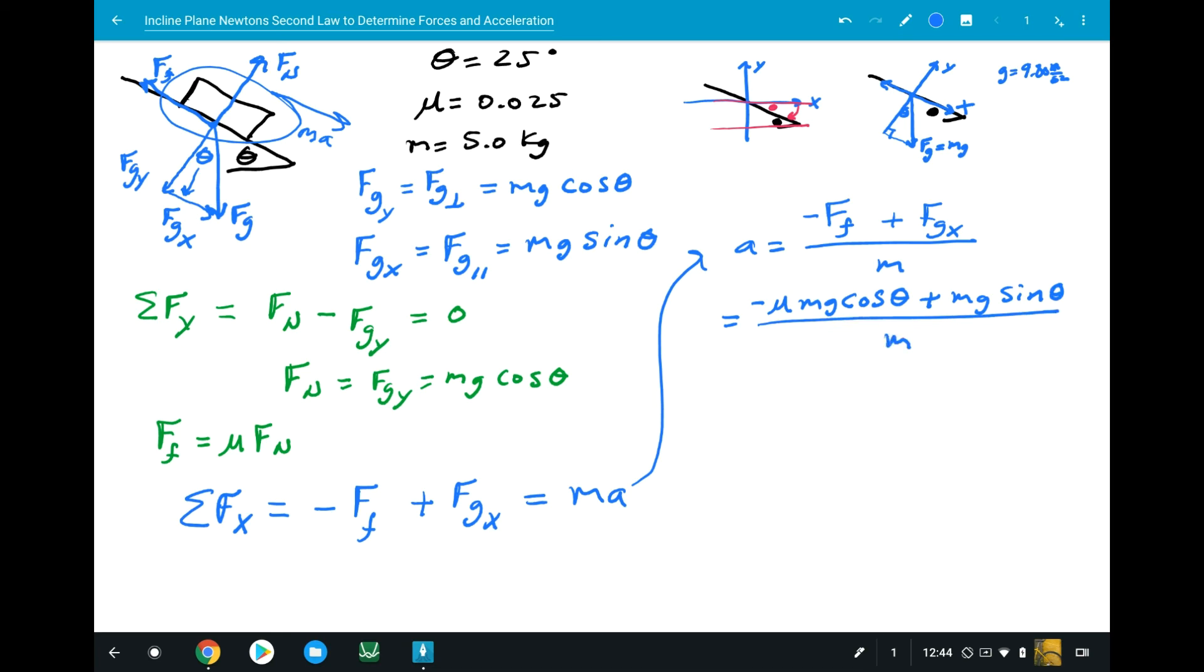Check this out. If you factor out the M above, mass cancels from this system. So A equals minus mu G cosine theta plus G sine theta.